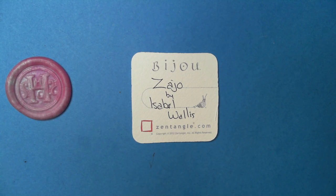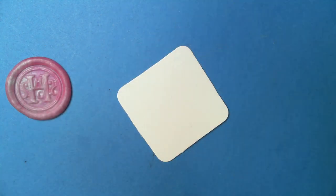Welcome to this Zentangle quickie. My name is Heather Hartwick Gladden, I'm a certified Zentangle teacher, and today we're going to take a look at the tangle Zajo, I'm hoping I'm pronouncing that right, from Isabel Wallace.